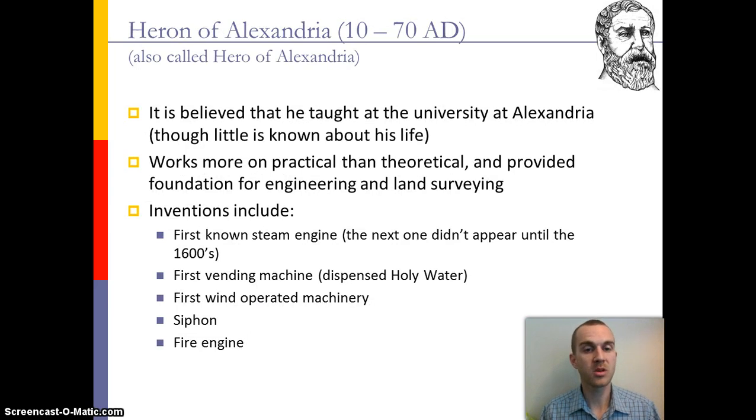A fourth important person of the time was Heron, also known as Hero of Alexandria. He was there approximately from 10 to 70 AD. It's believed that he taught at the university but it's not necessarily known because there's very little information about his actual life. Much of his work was very practical and applicable versus theoretical concepts. He created things like the steam engine and the vending machine and even a fire engine as well.